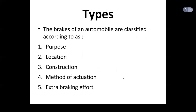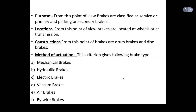The brakes of an automobile are classified into different types. According to purpose, brakes are classified as service or primary brakes and parking or secondary brakes. According to location, brakes are placed at wheels or at the transmission. According to construction, brakes are classified as drum brakes and disc brakes.